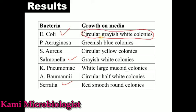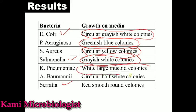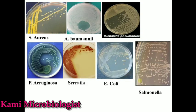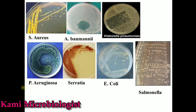E. coli will show circular grayish-white colonies on nutrient agar. Pseudomonas will show grayish greenish-blue colonies. Staphylococcus aureus will show circular yellow colonies. Salmonella will show grayish-white colonies. Klebsiella will show large white mucoid colonies. Aeromonas will show circular half-white colonies. These colony appearances are visible in the diagrams shown.